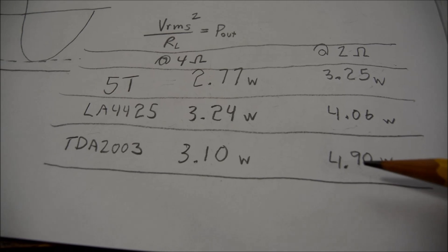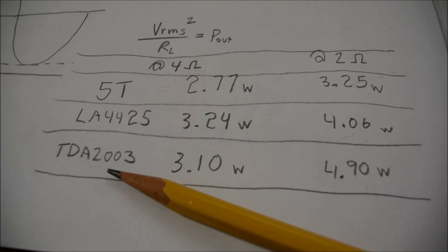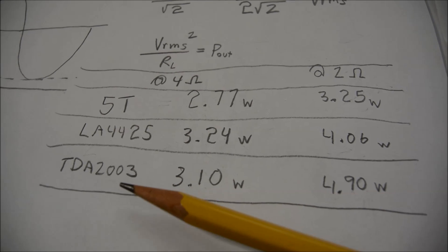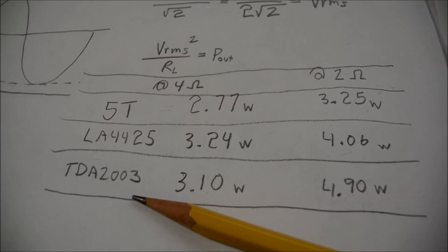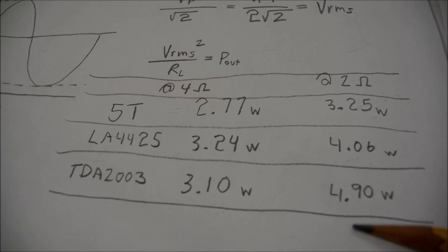I think the TDA2003 can deliver a lot of current because it can be used in bridged mode, and it'll handle down to 3.2 ohms bridged. So it needs to deliver a lot of output current to do that.